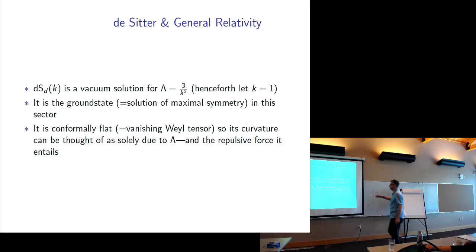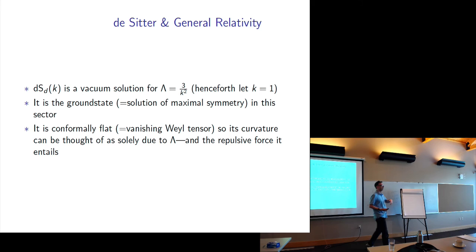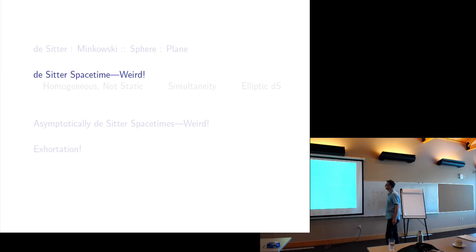How does de Sitter spacetime come from general relativity? It's a vacuum solution for positive lambda, where the size of lambda is given by the size of the de Sitter spacetime — each de Sitter spacetime has a radius you have to pick. From now on, we'll say it's one. It's the ground state of the gravitational field for positive lambda in the sense that it's the solution of maximum symmetry. In the four-dimensional case, the symmetry group is ten-dimensional, just like the Poincaré group. It's conformally flat, and everything going on here that's different from Minkowski space is all due to lambda.